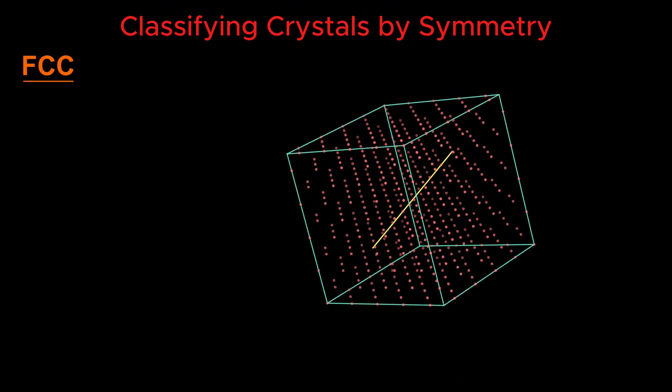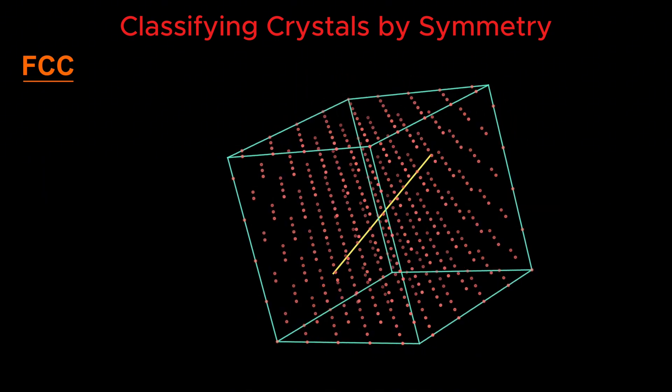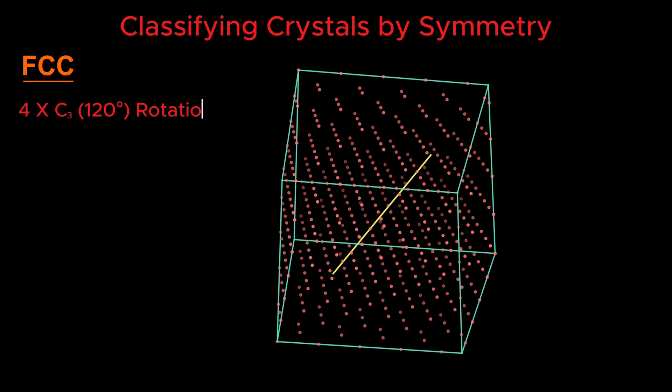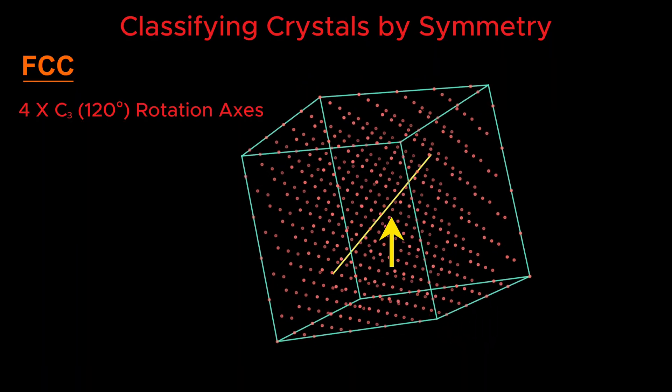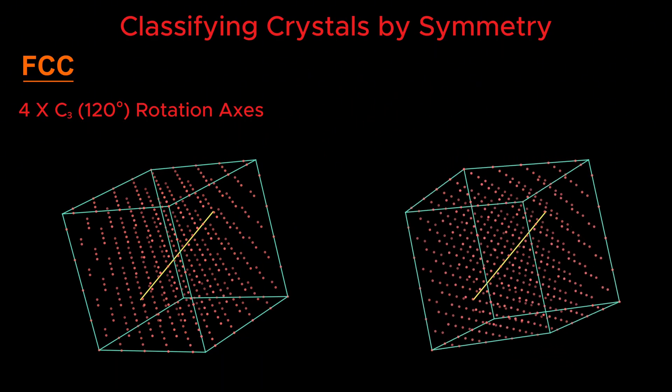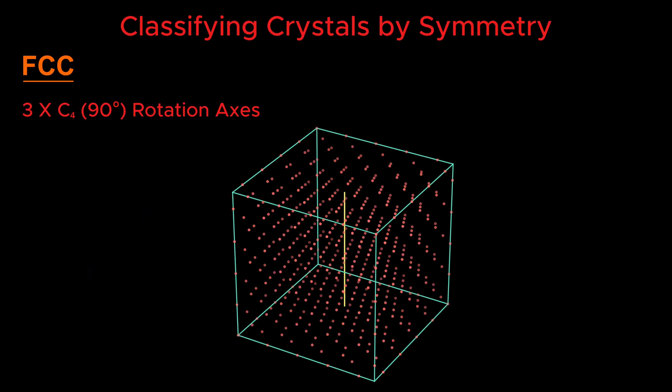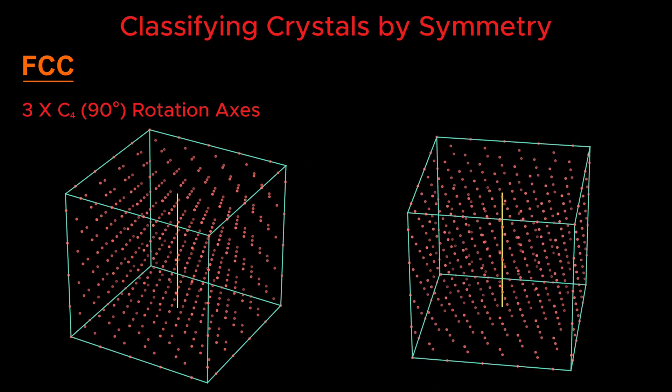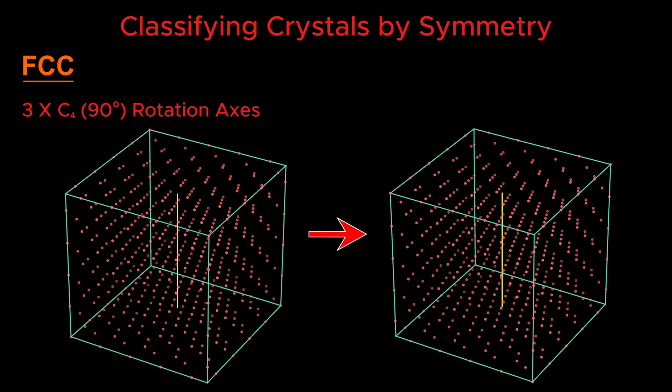FCC crystals have one of the highest symmetry levels among all crystal structures. For example, FCC has four three-fold rotational axes, often called C3, running through its body diagonals. Rotate the crystal by 120 degrees and it looks identical. It also has three four-fold rotational axes, called C4, through the cube faces. Rotate 90 degrees and it still looks the same. If a crystal has all these symmetries, it must belong to the FCC class.